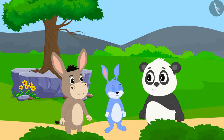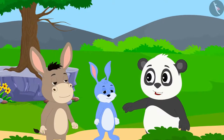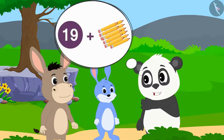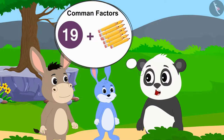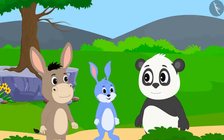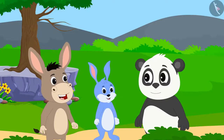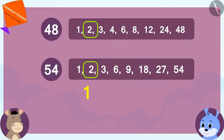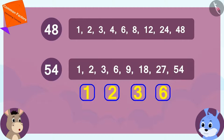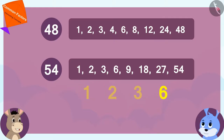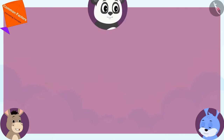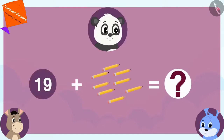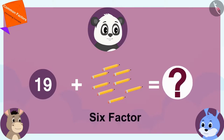Golu told Bunny and Bola: I have a solution for this. Why don't I add more pencils to these, so that we can get even more common factors in these three numbers? Bola and Bunny liked Golu's suggestion very much. Bola immediately found the common factors of 48 and 54, and 6 is the highest common factor of these numbers. So we have to increase the number of Golu's 19 pencils in such a way that the increased number also has 6 as a factor.